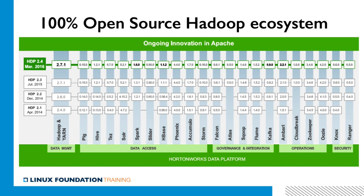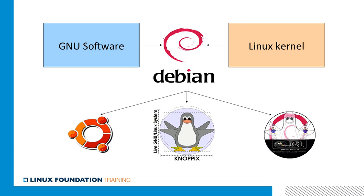The situation, in a way, is very similar to Linux distributions, where the multitude of applications all running on the same kernel need to be managed together as a consistent software package. In fact, the Linux distribution model was an inspiration for how to manage this complexity of the Hadoop ecosystem. In order to appreciate it, let's go back 15 to 20 years and remember that the mission of integrating all of the GNU software and the Linux kernel was first realized by a 100% open and community-driven distribution called Debian.